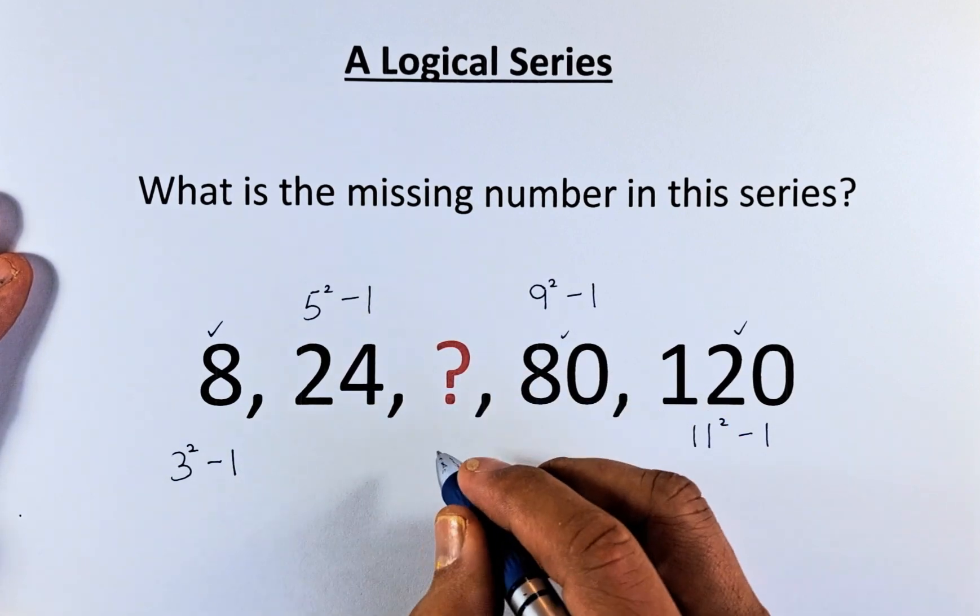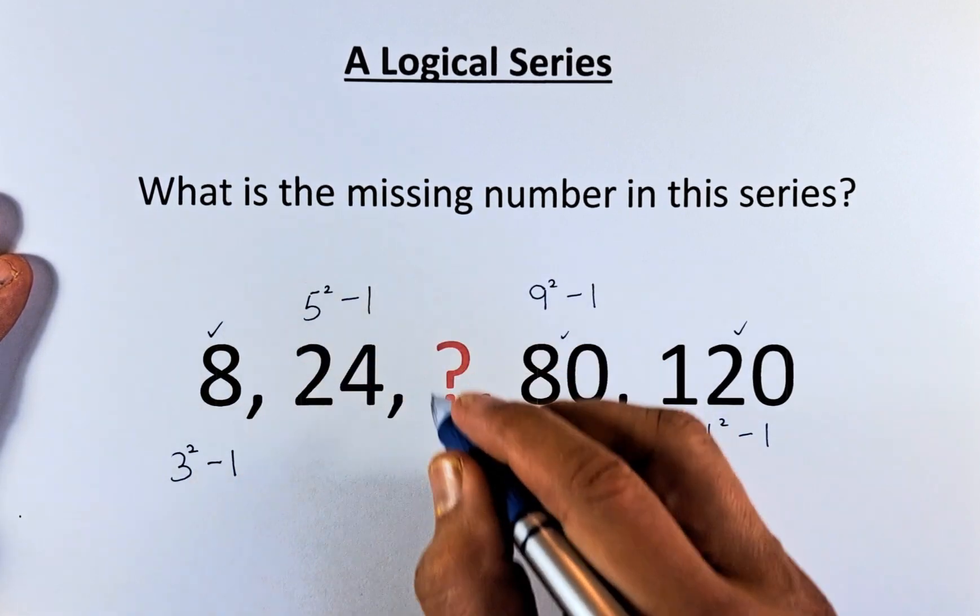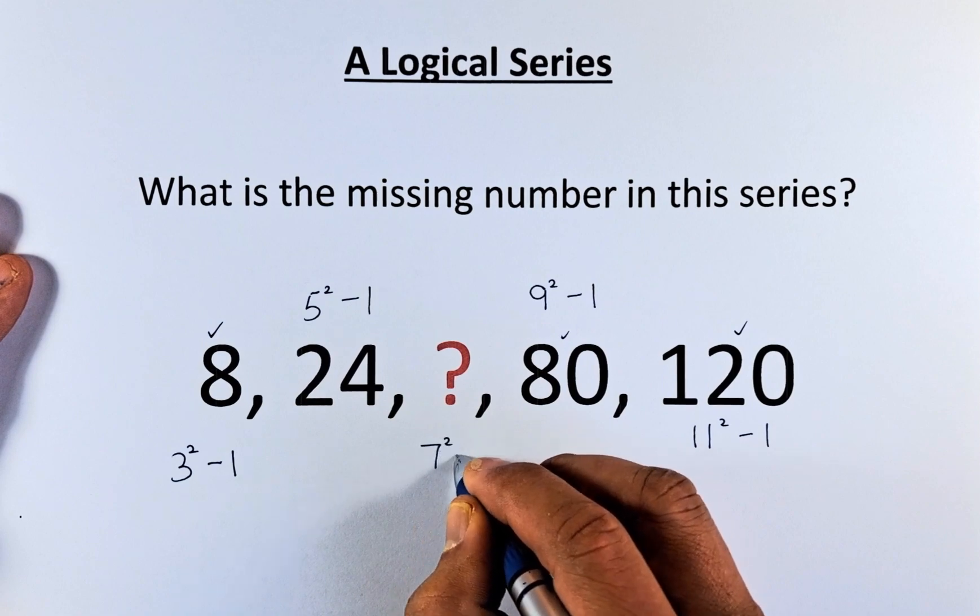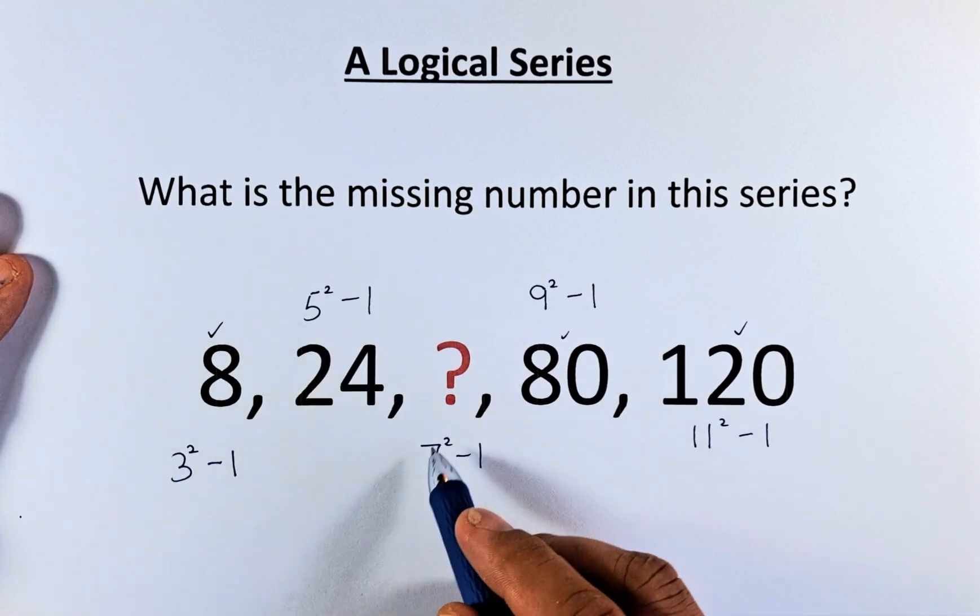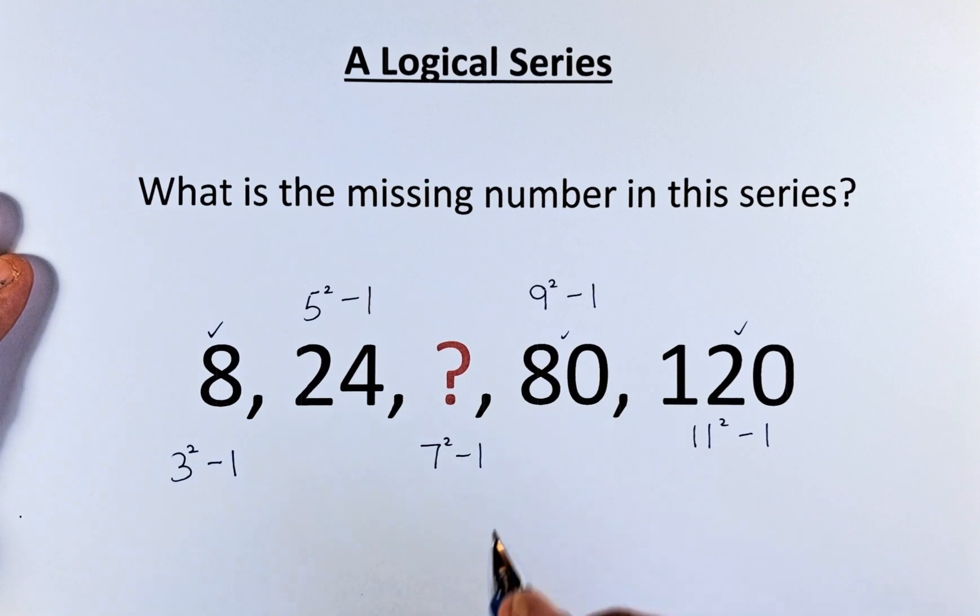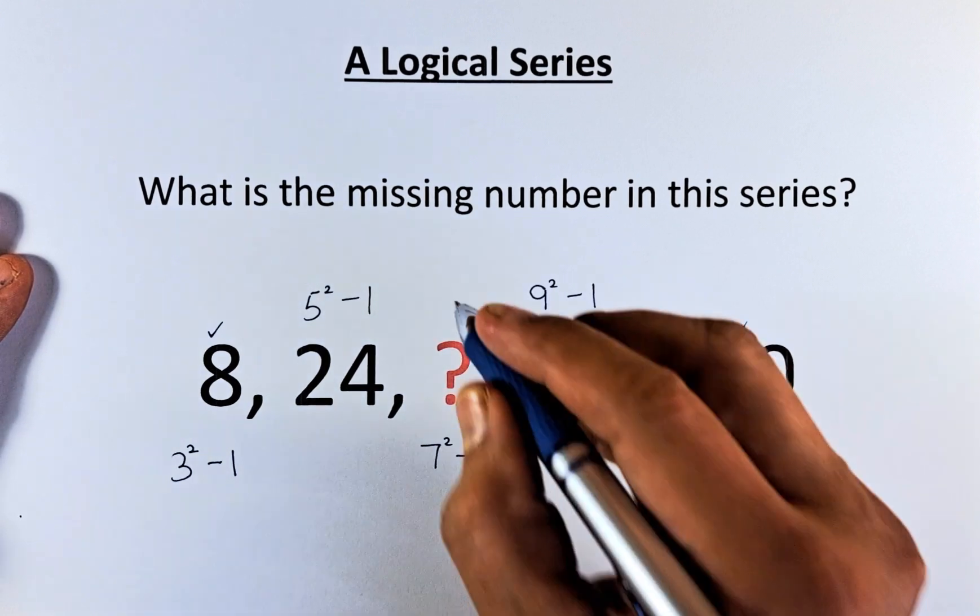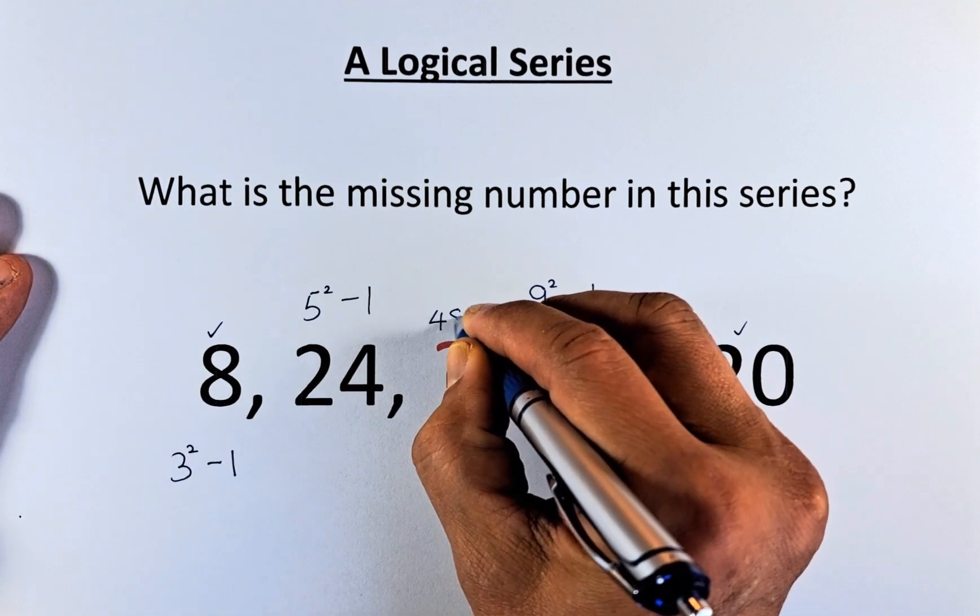So, the question mark here has to be what? 3, 5, the next number should be 7 squared minus 1. So 3, 5, 7, 9, 11 minus 1. So 7 squared is 49. 49 minus 1 is going to be 48.